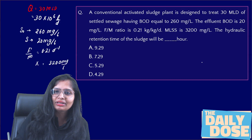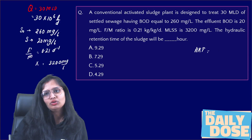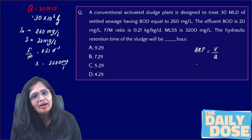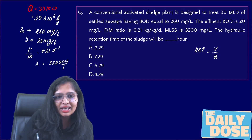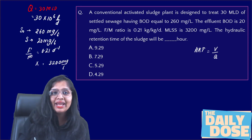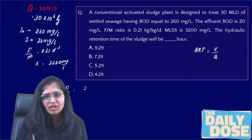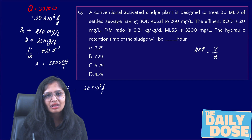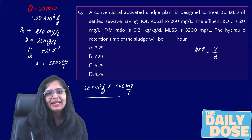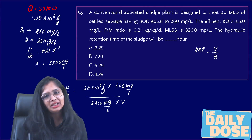Let's write HRT for short. HRT equals volume divided by discharge. Now, volume is not directly given in the question, so we need to find it. We start from the food-to-microorganism ratio. The food is the organic matter: in one litre there is 260 mg of BOD, so in 30 MLD the total food is 30 × 10⁶ × 260 mg/L. The microorganisms are 3200 mg/L in the volume of the aeration tank.